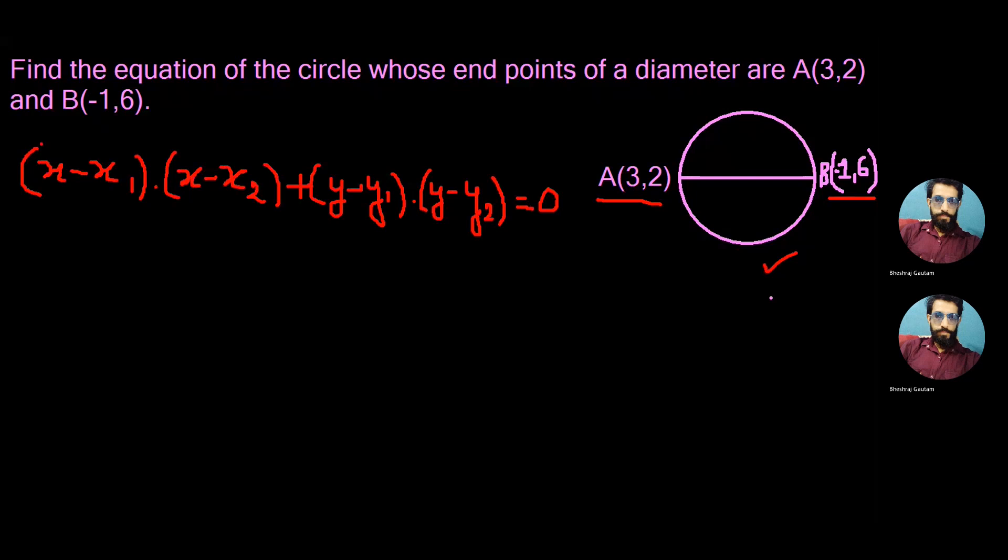Where x₁ and y₁ are the coordinates of one end of the diameter, and similarly x₂ and y₂ are the coordinates of the other end. Now putting 3 as x₁ and 2 as y₁, similarly -1 as x₂ and 6 as y₂...